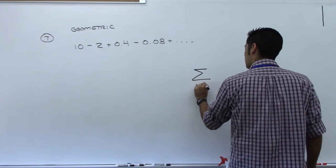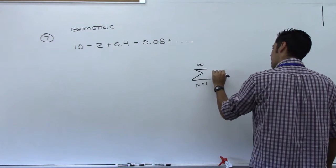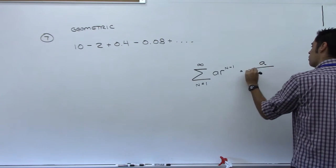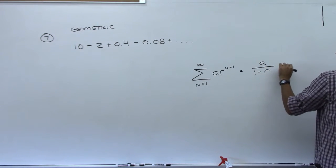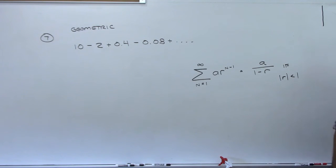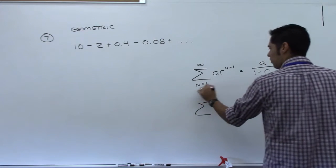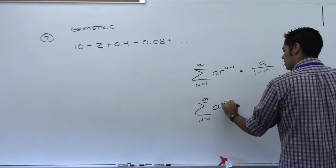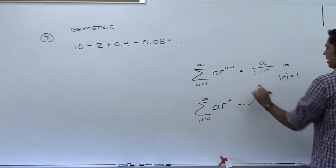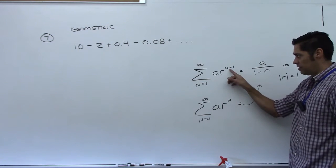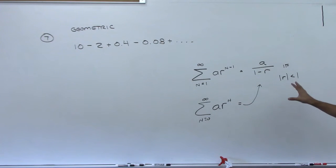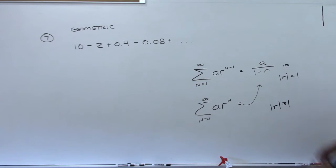The sum from n equals 1 to infinity of a·r^(n-1) equals a over 1 minus r, if the absolute value of r is less than 1. We can also shift the index from 1 to 0: sum of a·r^n, which equals the same thing. All that does is shift the index — n minus 1 changes to n, and the start changes from 1 to 0. If the absolute value of r is greater than or equal to 1, the series diverges.